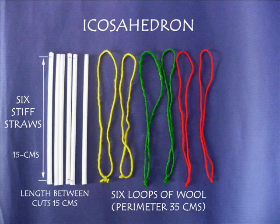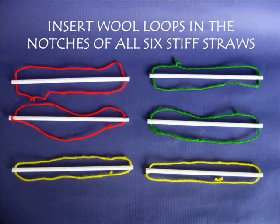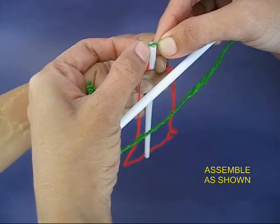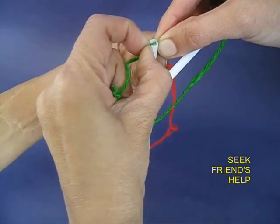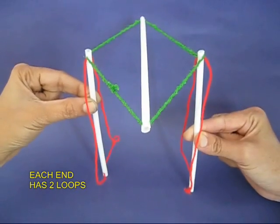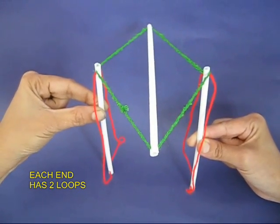Now we are going to make an icosahedron. You require six stiff straws and six loops of thread. The straw should be 15 cm long and the perimeter of each loop would be 35 cm. If you take the assistance of a friend, it would help you assemble this model much more easily.